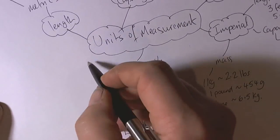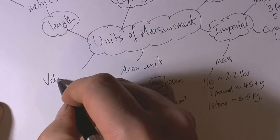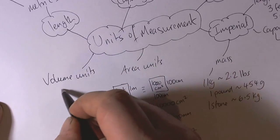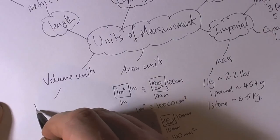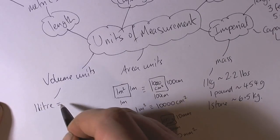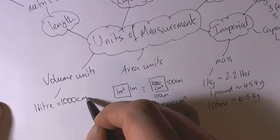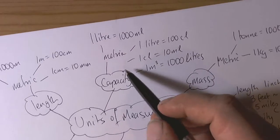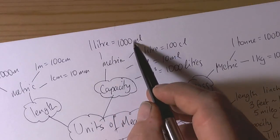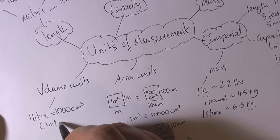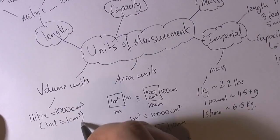And volume units. Well, it's really important that we recognise that 1 litre is the same as 1000 cubic centimetres. Now we had a conversion earlier that 1 litre is 1000 millilitres, so this really means that 1 millilitre is equivalent to 1 cubic centimetre.